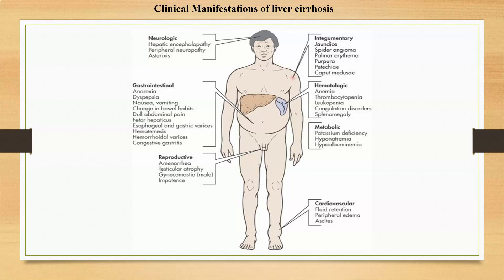Hematological symptoms include anemia, thrombocytopenia, leukopenia, coagulation disorders, and splenomegaly. Metabolic changes present as potassium deficiency, hyponatremia, and hypoalbuminemia. Cardiovascular symptoms include fluid retention, peripheral edema, and ascites. In the next video, the medical and nursing management will be covered.